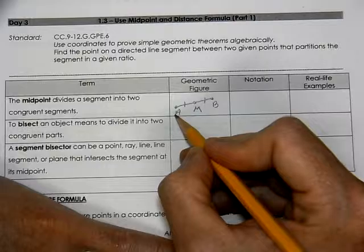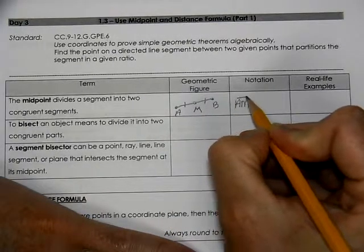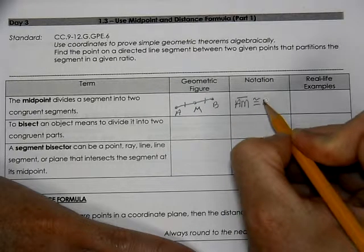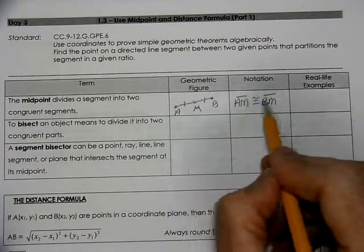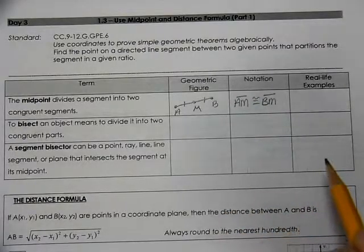For notation, AM with a line over it is congruent to BM. We often like to use the endpoints to come first when we write out our statements.